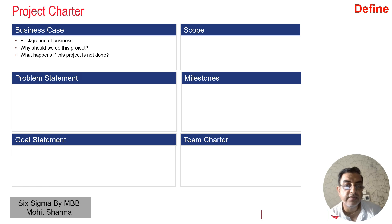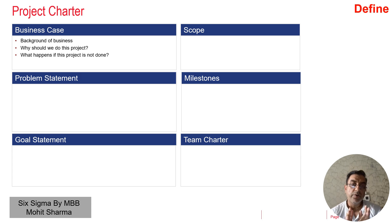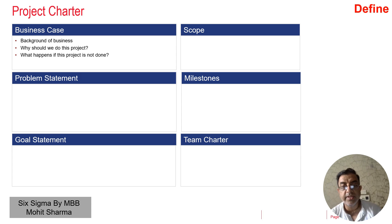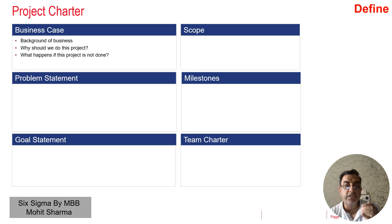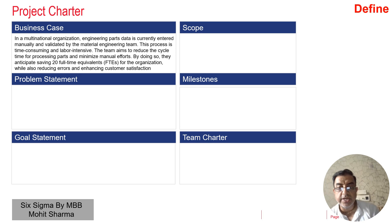The first one is the business case. Business case should have the background of the business, why you want to do this project, and what happens if the project is not done. These three questions should be answered, but not in the form of a question and answer — it should be in the form of a paragraph. Let us look at this business case example.